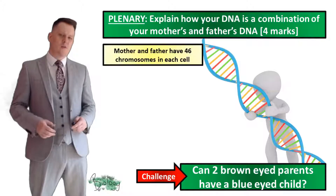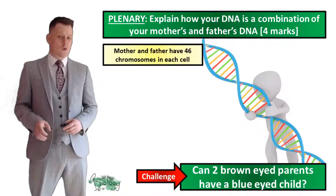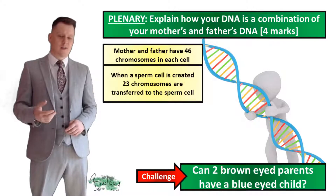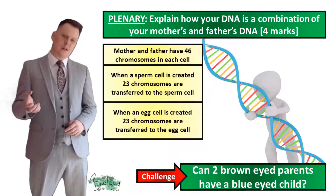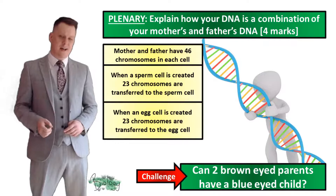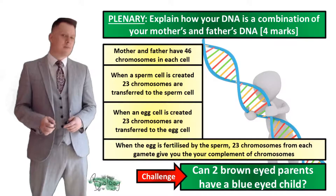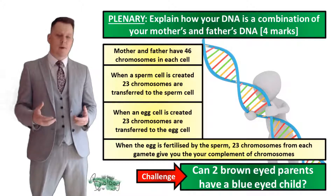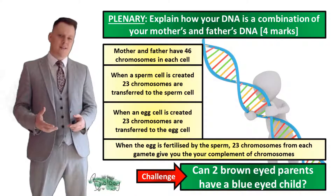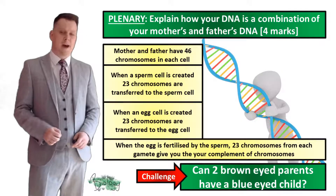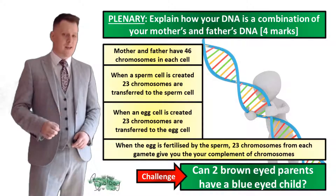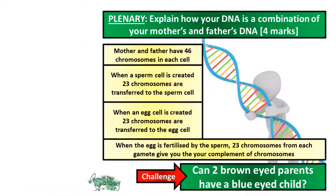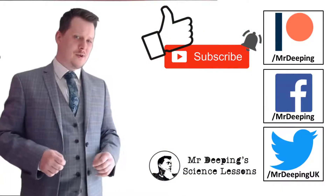A normal human body cell contains 46 chromosomes — true for both mum and dad. When a sperm cell is created, 23 of those chromosomes are transferred to the sperm cell. When an egg cell is created, 23 chromosomes are transferred to the egg cell. When the egg is fertilized by the sperm, 23 chromosomes from each sex cell give us the full complement of 46 chromosomes. The challenge of whether two brown-eyed parents can have a blue-eyed child will be covered next time. That's the end of our inheritance lesson.